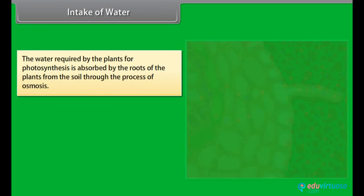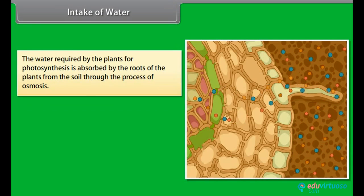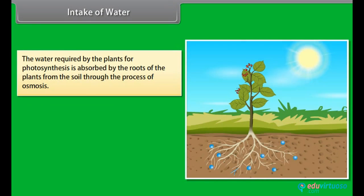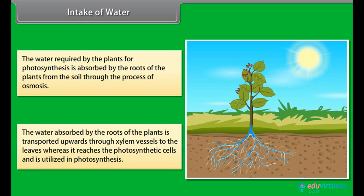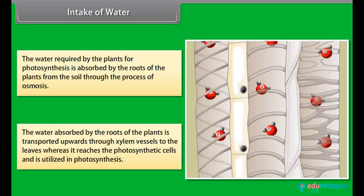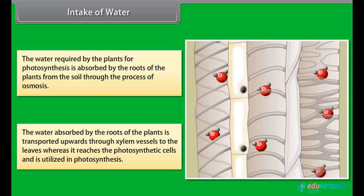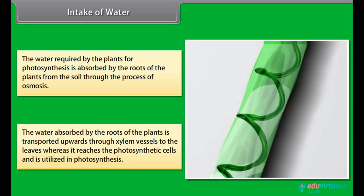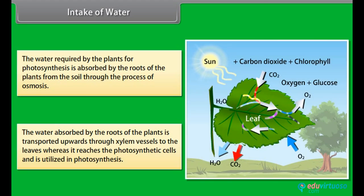The water required by plants for photosynthesis is absorbed by the roots from the soil through the process of osmosis. The water absorbed by the roots is transported upwards through xylem vessels to the leaves, where it reaches the photosynthetic cells and is utilized in photosynthesis.